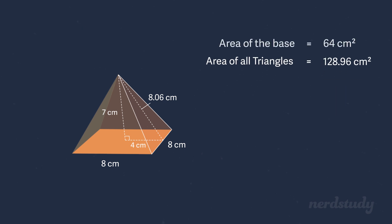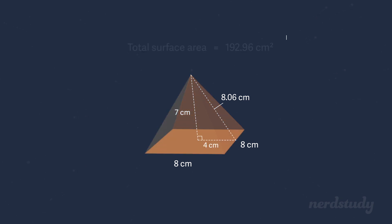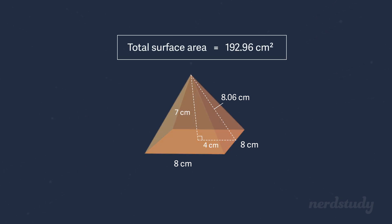Now, if we retrieve our area of the base that we calculated earlier, which was 64 centimeters squared, and add it to our area of the four lateral faces, we get 192.96 centimeters squared. So the surface area of this pyramid is roughly 192.96, with some room for error since we did round that 8.06 during our calculations.